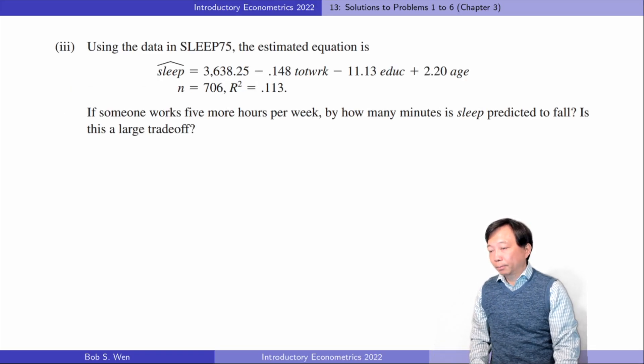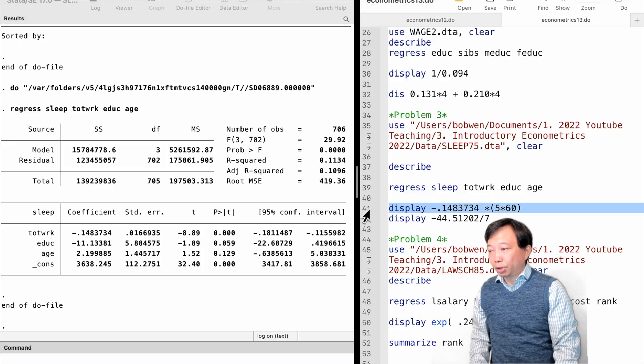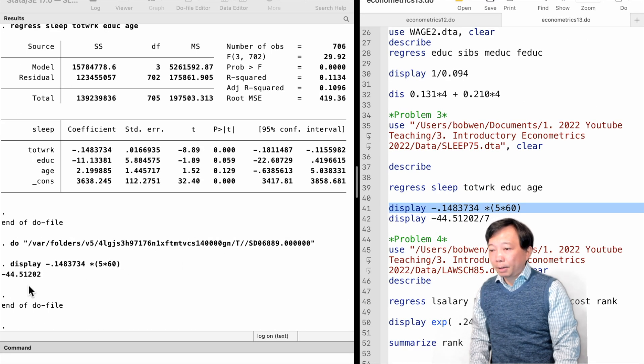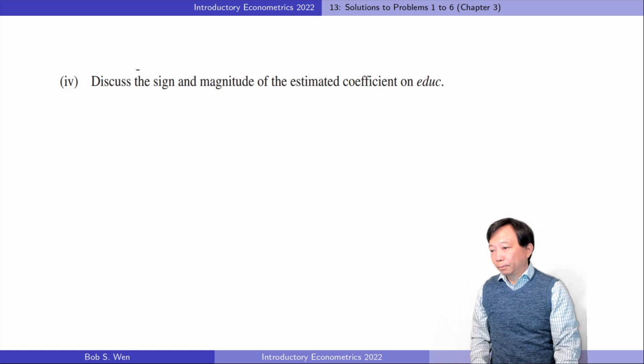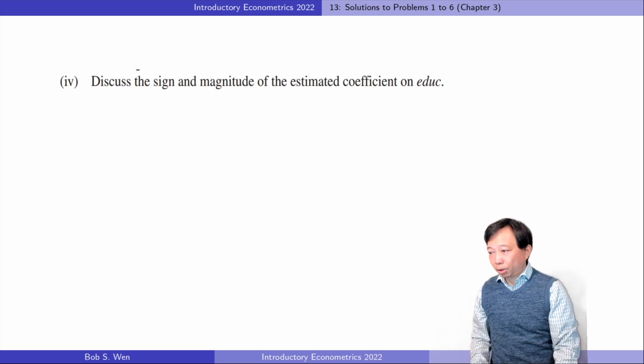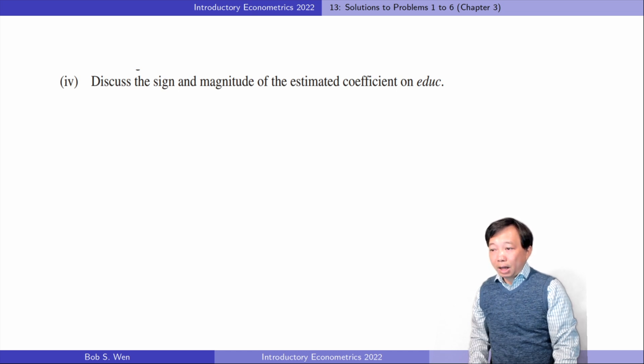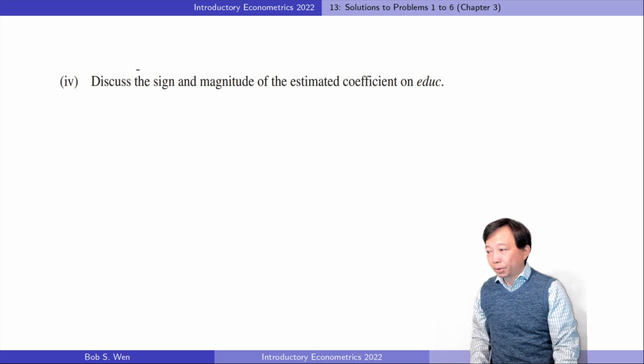For the third question, if someone works 5 more hours per week, that is 300 minutes, the sleep time is predicted to fall by 44.5 minutes per week, that is about 6 minutes per night on average. For the fourth question, the estimated coefficient on education is minus 11.13. It implies that 1 more year of schooling leads to 11 minutes less sleep per week. It is about 2 minutes per week. It is a small effect.